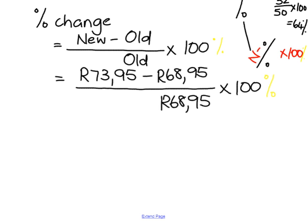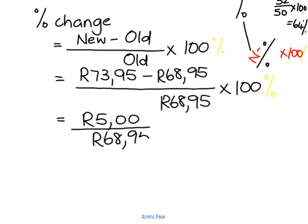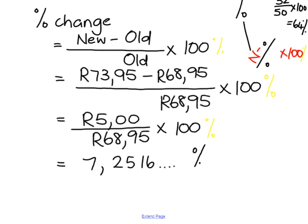73.95 minus 68.95 gives me $5. So we have 5 over 68.95, multiplied by a hundred percent. Pick up your calculator and you will get 7.2516 and so on. Don't forget your unit — it is a percentage.